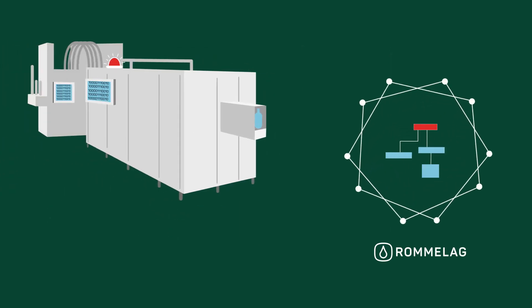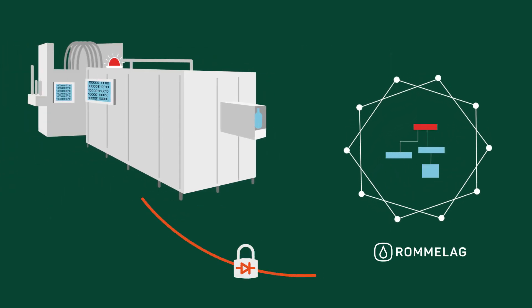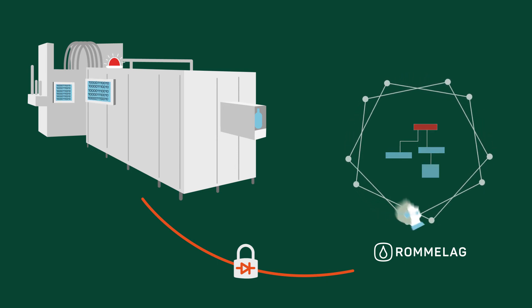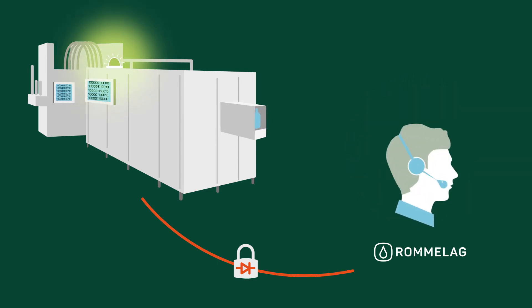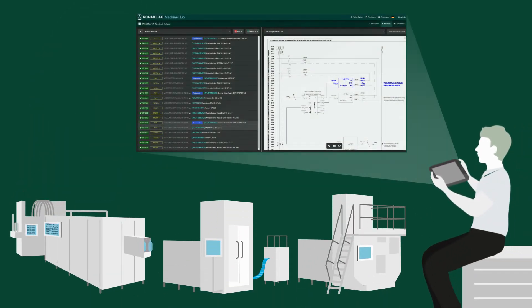On top of that, it even allows to securely share machine-related data with Romaluk to improve overall machine reliability or integrate into other services like our Service Hotline or the online Spare Part Catalog, Machine Hub, where you can query part lists or review schematics.